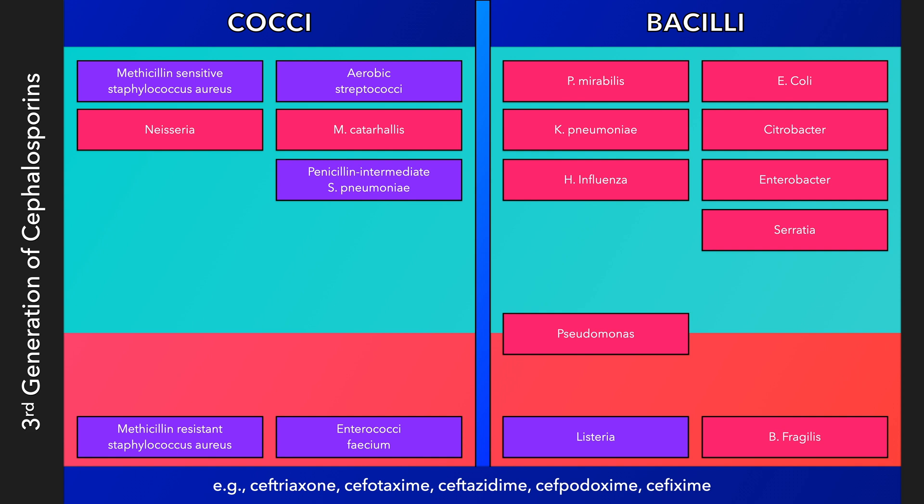Ceftriaxone, an intravenous third-generation cephalosporin, is also usually active against Salmonella, which is not shown here. This generation of cephalosporins is more stable to the beta-lactamases produced by gram-negative bacilli, and can often be effective against infections that are otherwise resistant to the first two generations of cephalosporins.